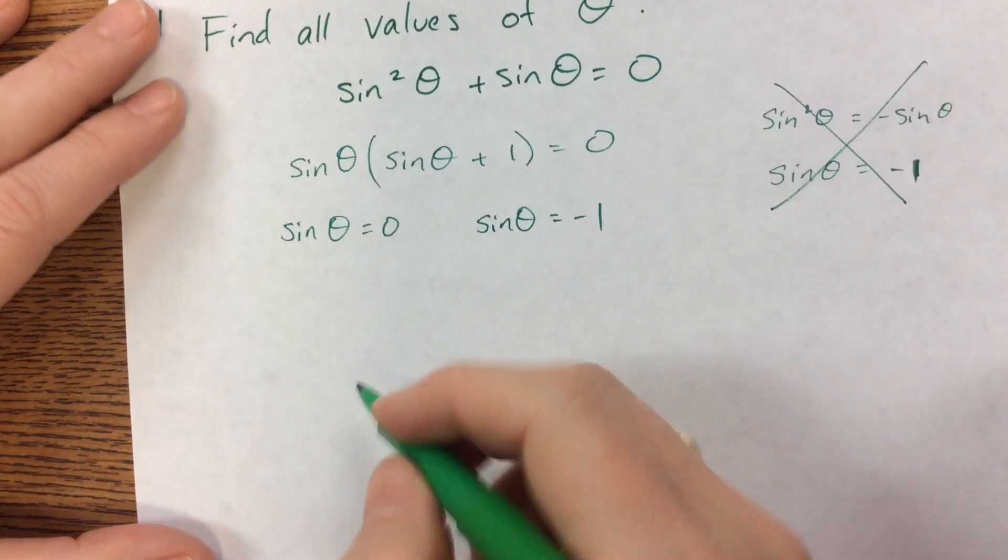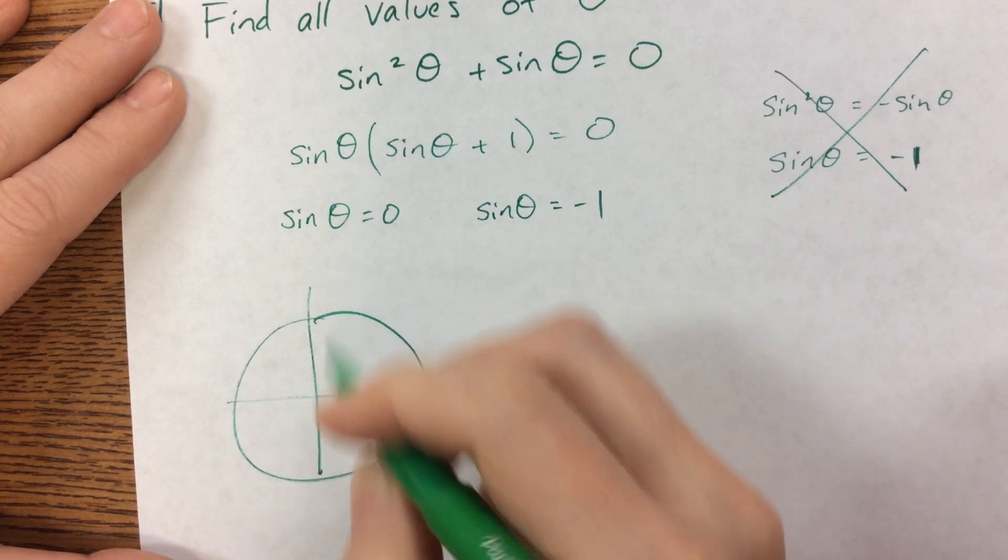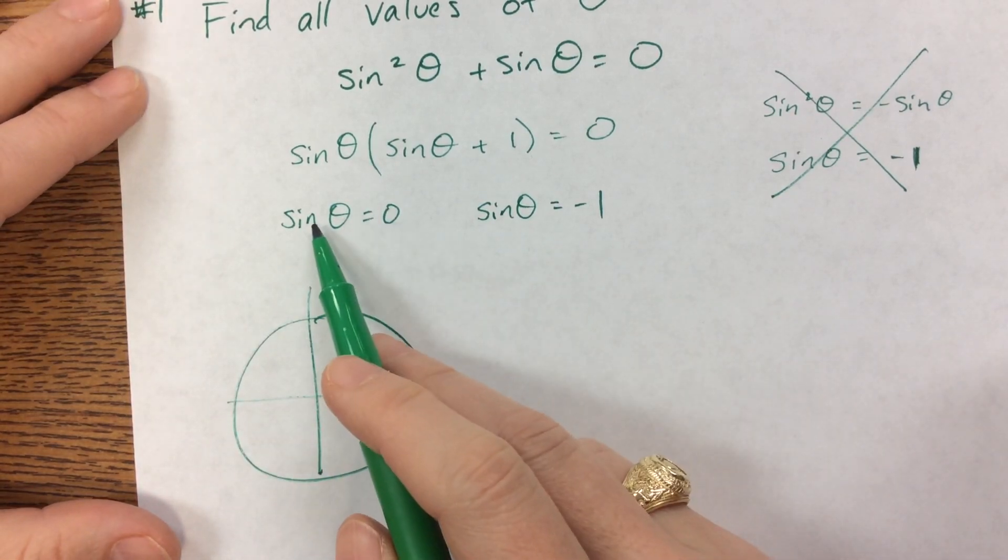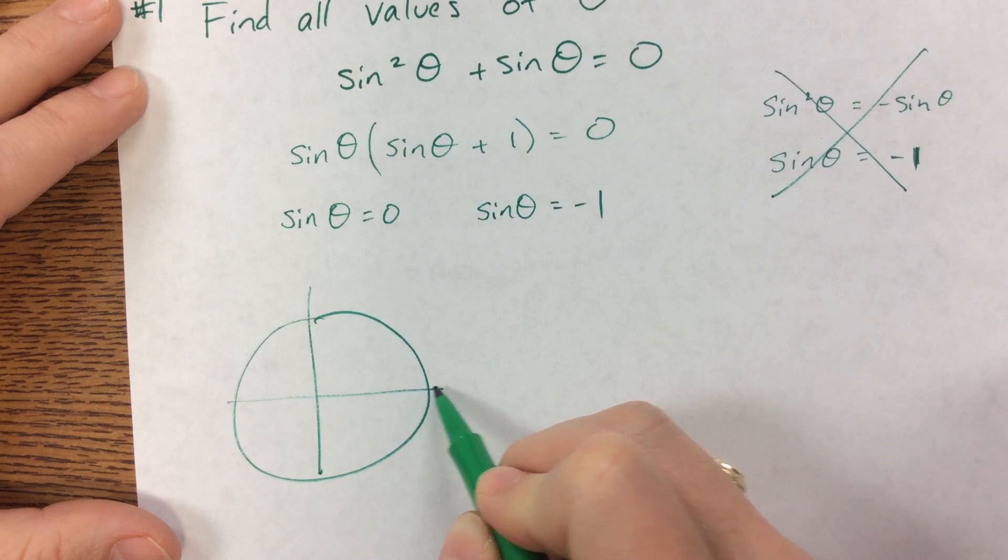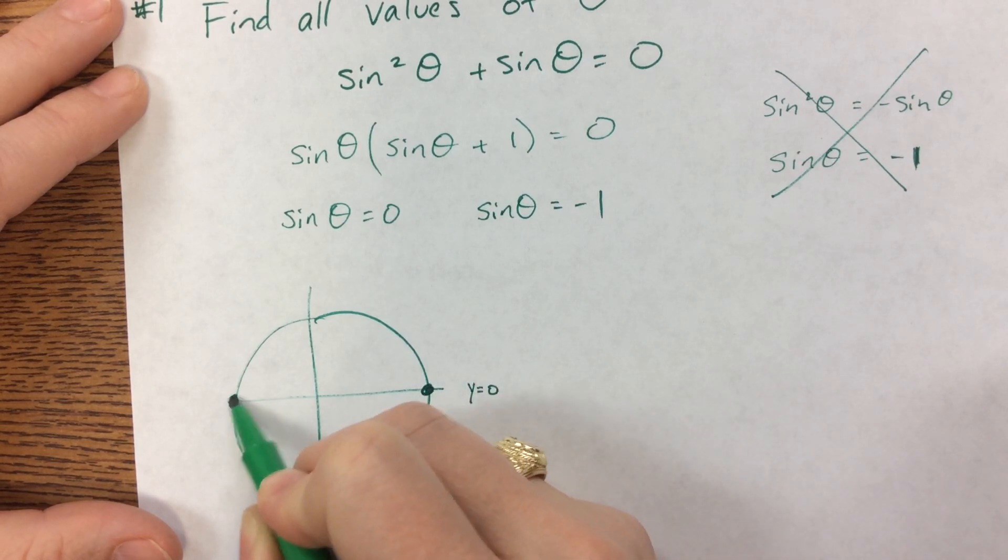And here's where we think back to our unit circle. Sorry, my pen seems to be dying. Sine, if you remember off the unit circle, is the y value, so I want to know when does y equals zero. Well, that's here, and that's here.